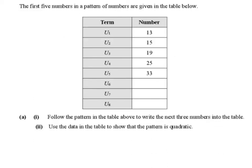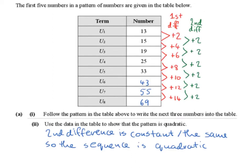Part A. Follow the pattern in the table to write the next three terms. Use the data in the table to show the pattern is quadratic. To get from 13 to 15 is a difference of 2. From 15 to 19 is a difference of 4. From 19 to 25 is a difference of 6. From 25 to 33 is a difference of 8.